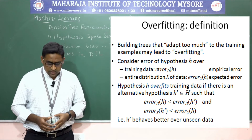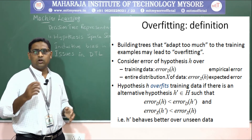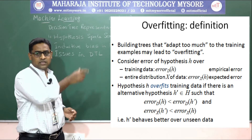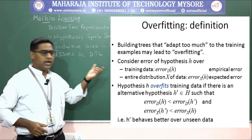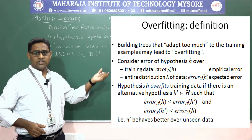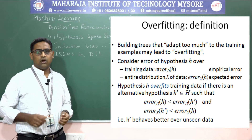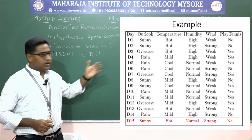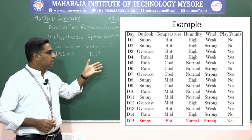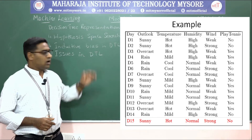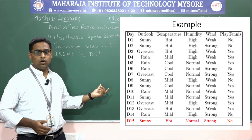Hypothesis H overfits the training data if there exists an alternative hypothesis H' such that the empirical error of H is less than that of H', but the expected error of H is greater than that of H'. That means H' behaves better on unseen data. For example, in the play tennis dataset with 14 days, adding a 15th row (D15) would be overfitting.